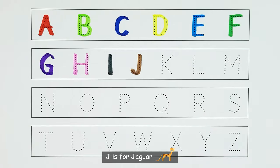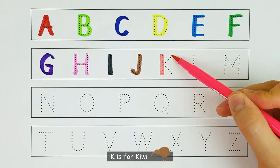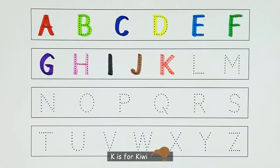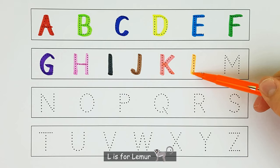J. J is for jaguar. J. K. K is for kiwi. K. L. L is for lemur. L.